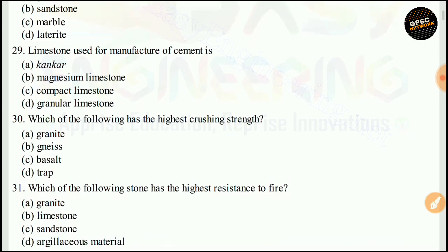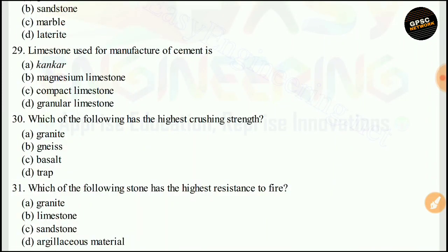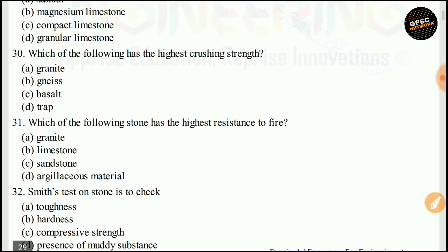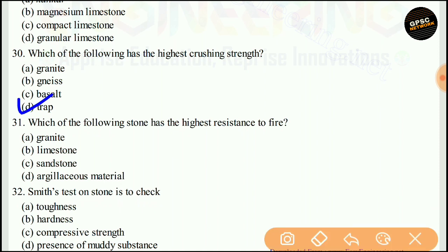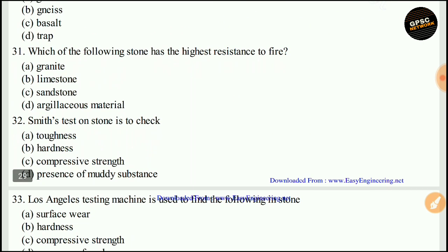Limestone used for manufacturing cement — the right answer is conquer. Which of the following has the highest crushing strength? Out of the four given options, the highest crushing strength is trap. The right answer is D. Which stone has the highest resistance to fire? The right answer is argillaceous material.